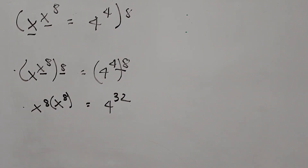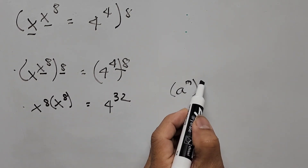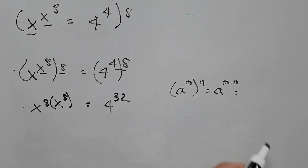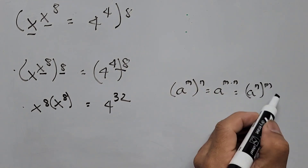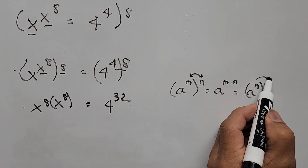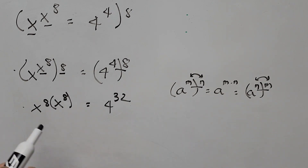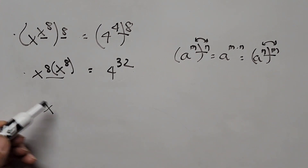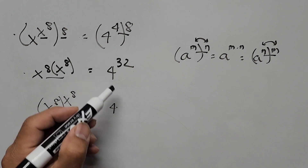Here we use the formula: base a raised to exponent m, raised to exponent n, equals a raised to m times n. This can also be written as a raised to n times m. Notice that the exponents interchange — n and m switch places. So the left-hand side can now be written as x to the power of 8, raised to the power of x to the power of 8, equals 4 raised to 32.